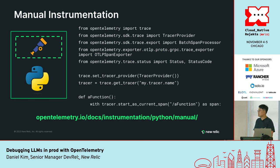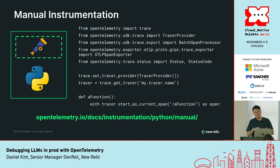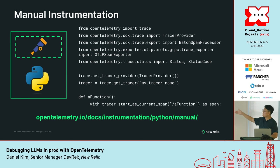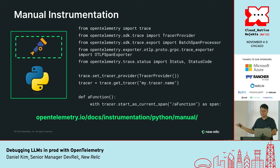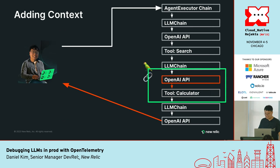That's where manual instrumentation comes in. Instead of just going into your command line and importing a bunch of stuff and running it, with manual instrumentation you actually have to edit your code. You have to import a bunch of libraries, set the trace provider, initialize it, and then actually specify which spans you want it to record. If you want more information about how to do this, please go to the docs — they're great about how to get started with Python instrumentation.